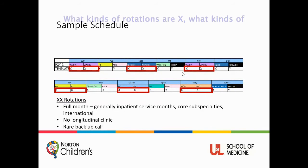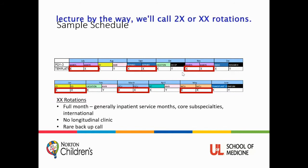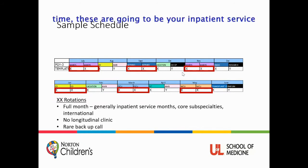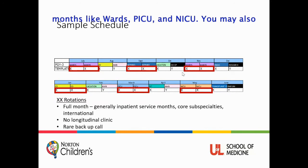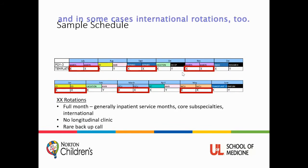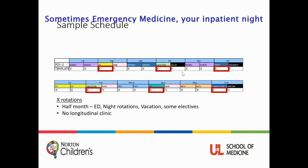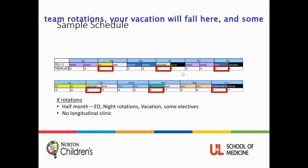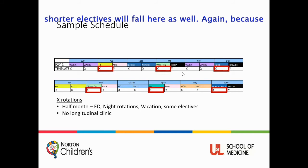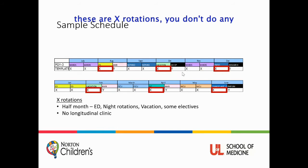So what kinds of rotations are X and what kinds are Y? You'll have some rotations we call 2X or XX rotations. These are full-month rotations, and most of the time these are going to be your inpatient service months, like wards, PICU, and NICU. You may also do some core subspecialty rotations and in some cases international rotations. During these rotations, you don't do any longitudinal clinic at all. You'll also have some shorter single X rotations — these are two-week or half-month rotations, including emergency medicine, inpatient rotations, vacation, and some shorter electives. Again, because these are X rotations, you don't do any longitudinal clinic at all.